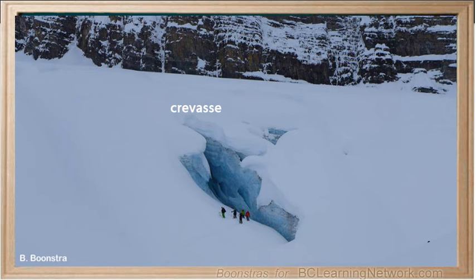A crevasse is a deep crack in an ice sheet or glacier. Crevasses usually form in the top 50 meters of a glacier, where the ice is brittle. Below that, a glacier is less brittle and can slide over uneven surfaces without cracking.